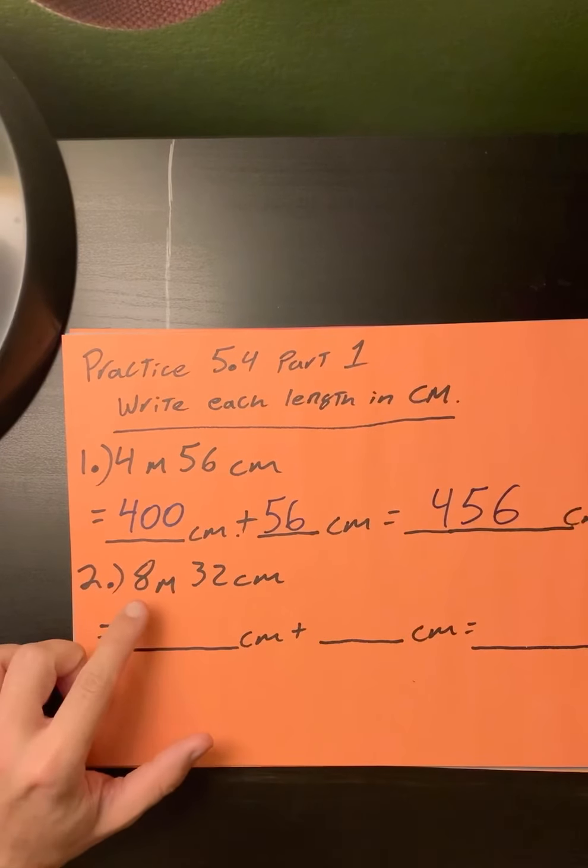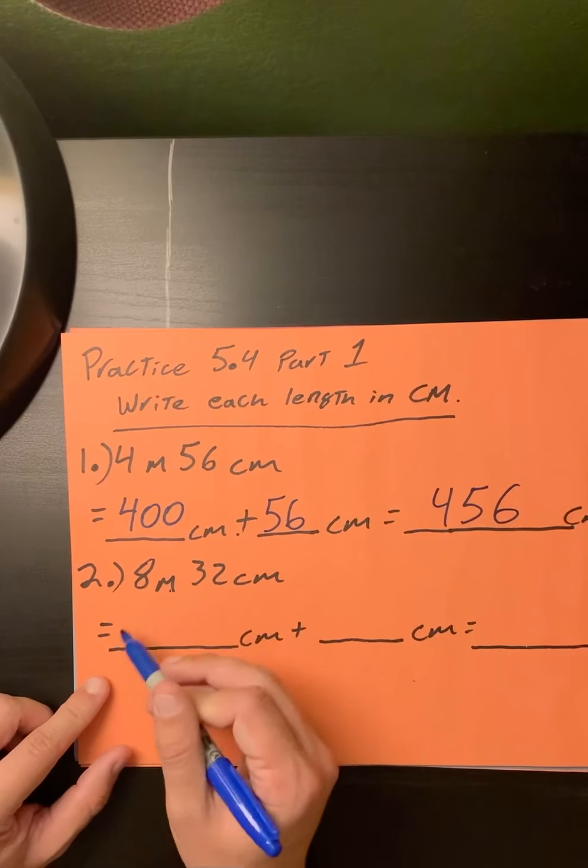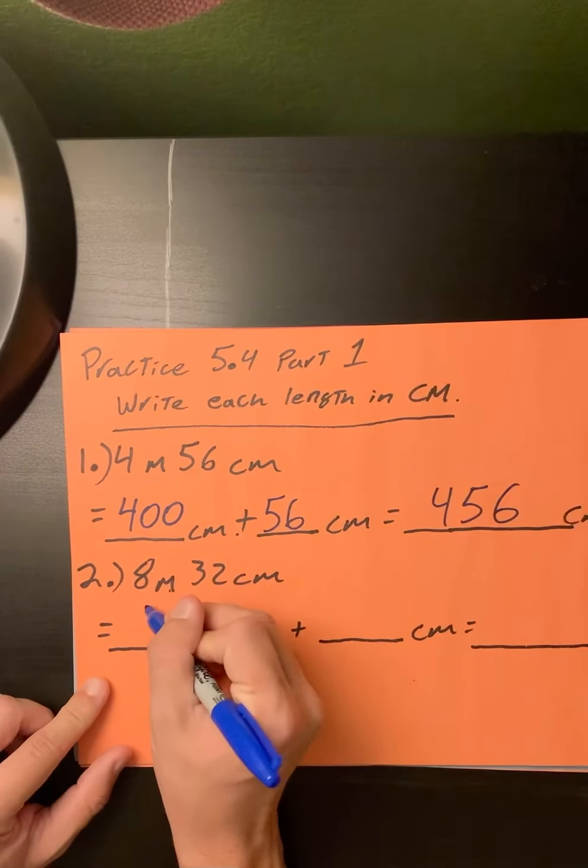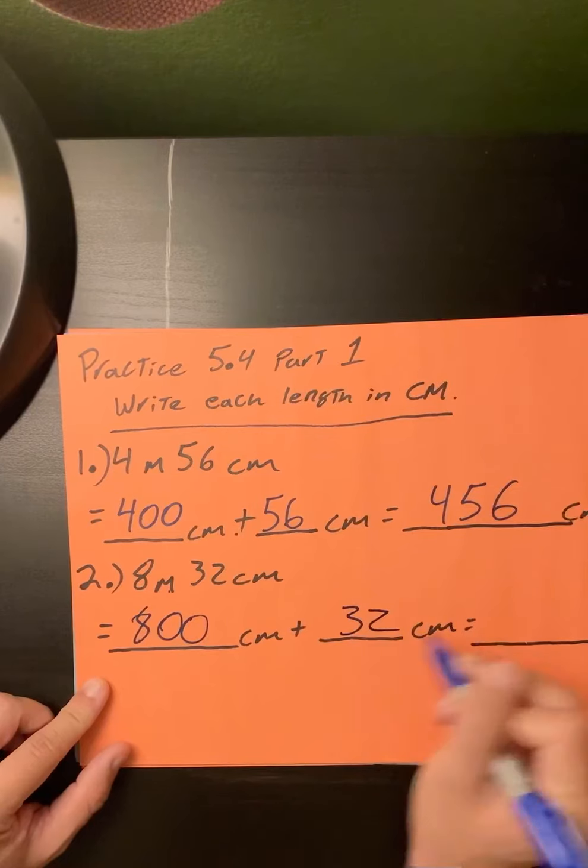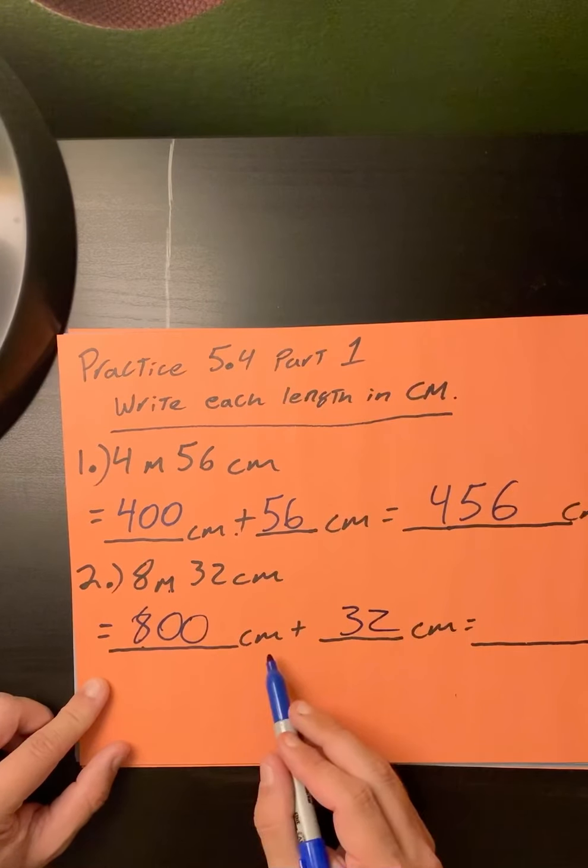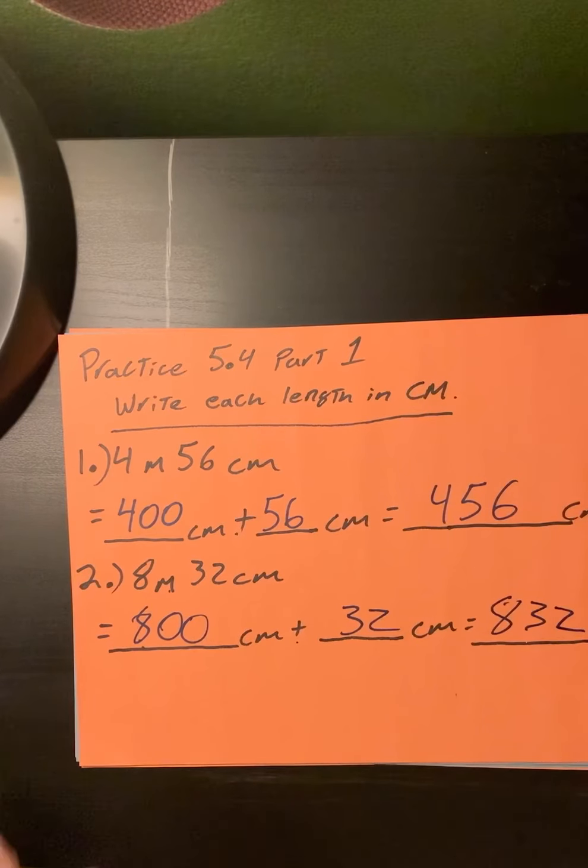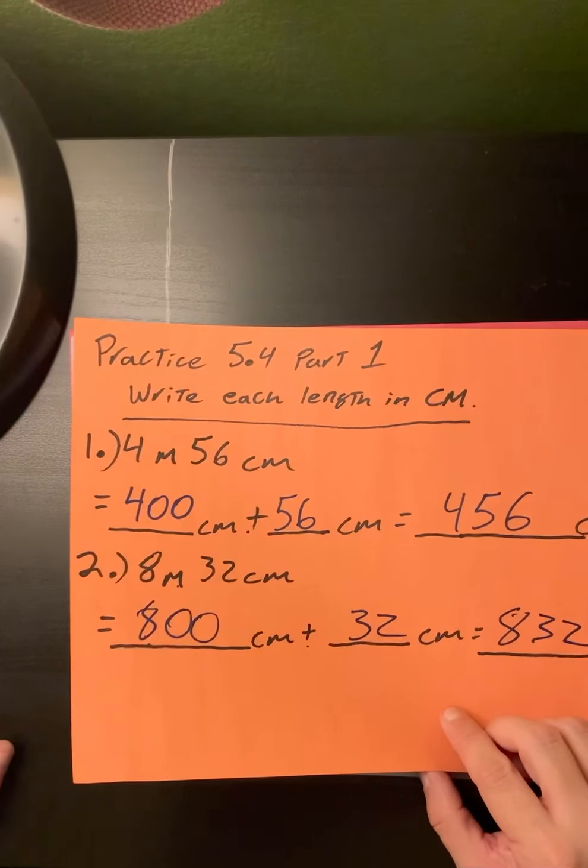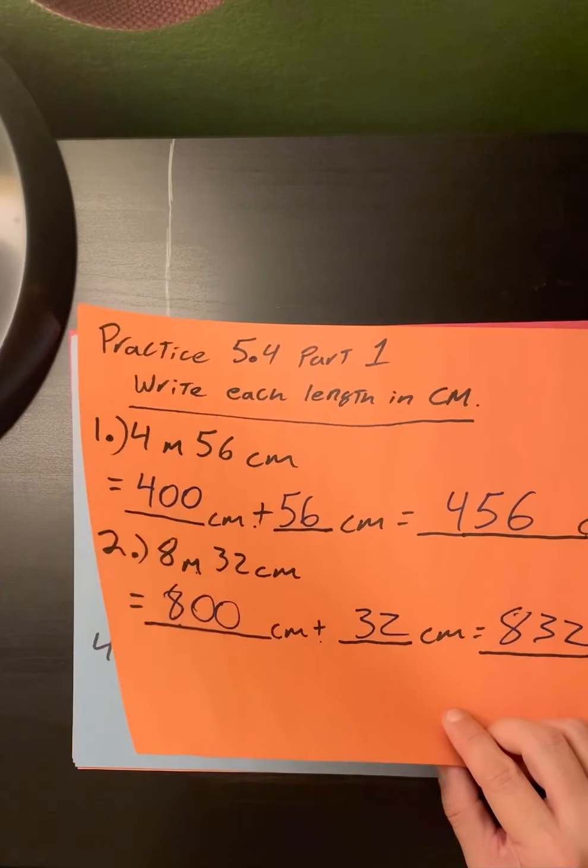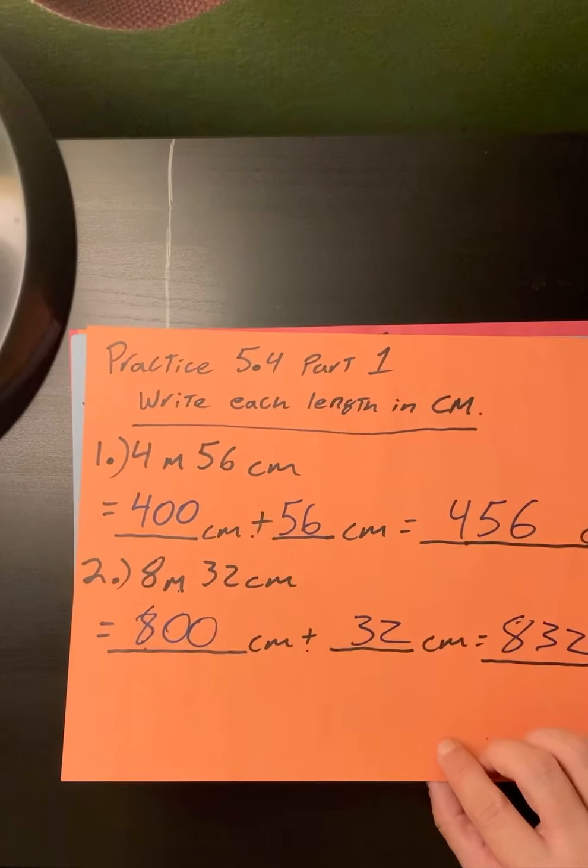Question number two: if I have 8 meters and 32 centimeters, my meters are 100, so I just turn this 8 to 100. 800 plus 32, all together 800 plus 32 is 832 centimeters. I like the metric system a lot better. It makes math a whole lot easier multiplying by 10s, 100s, or 1000s instead of 8s, 12s, 16s. But we do the best we can.